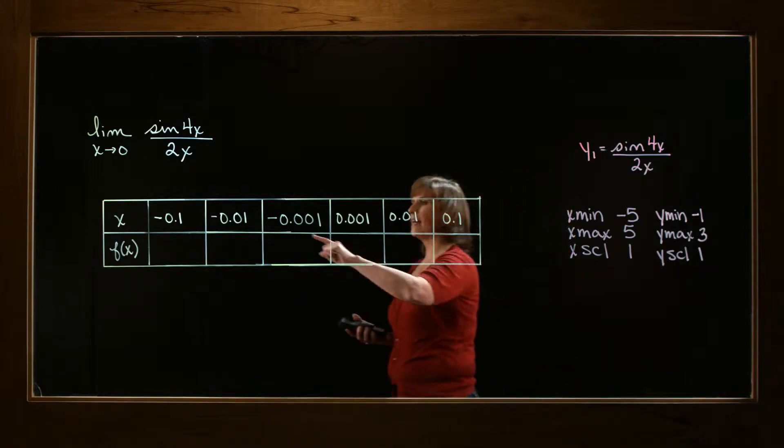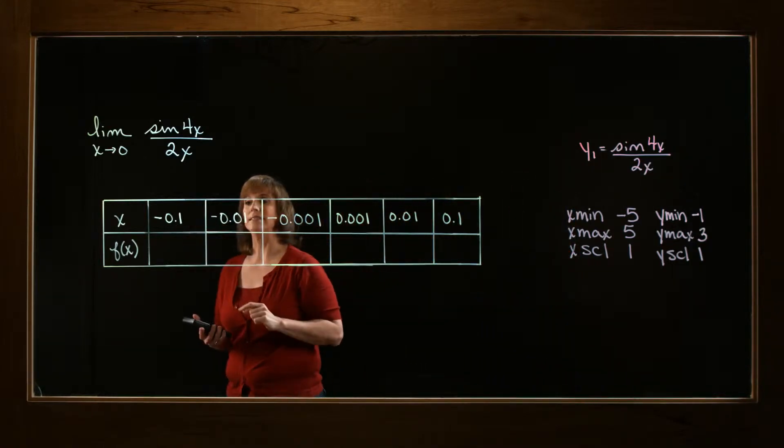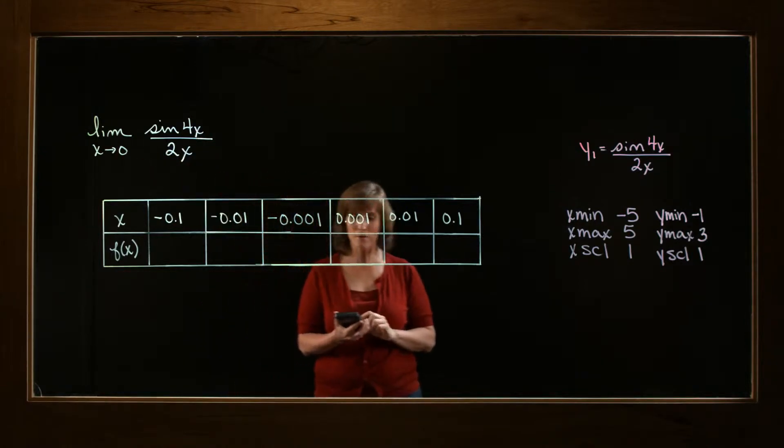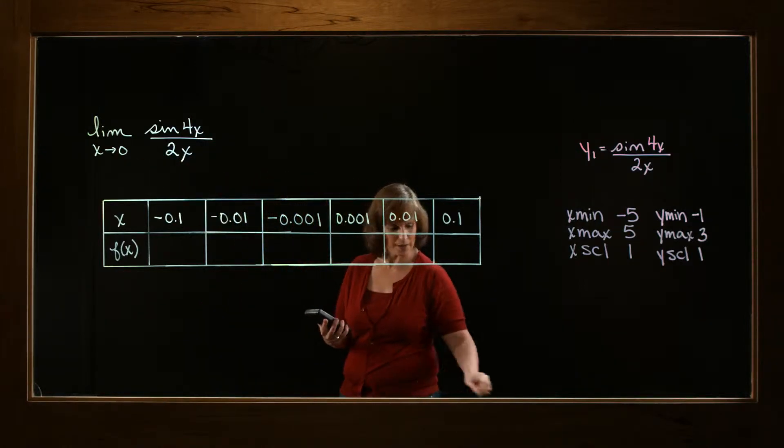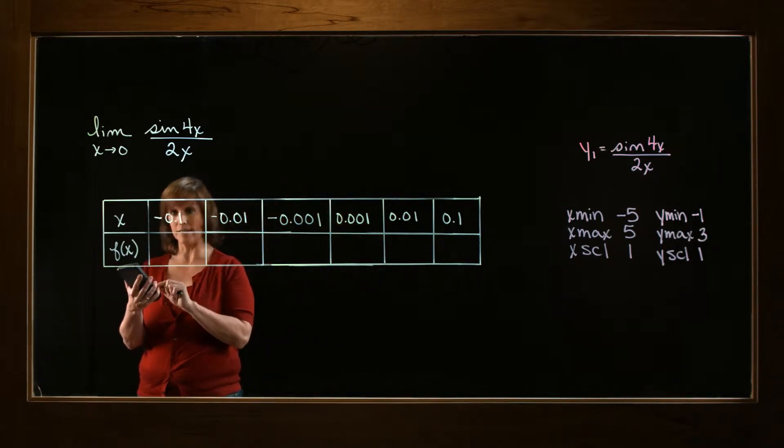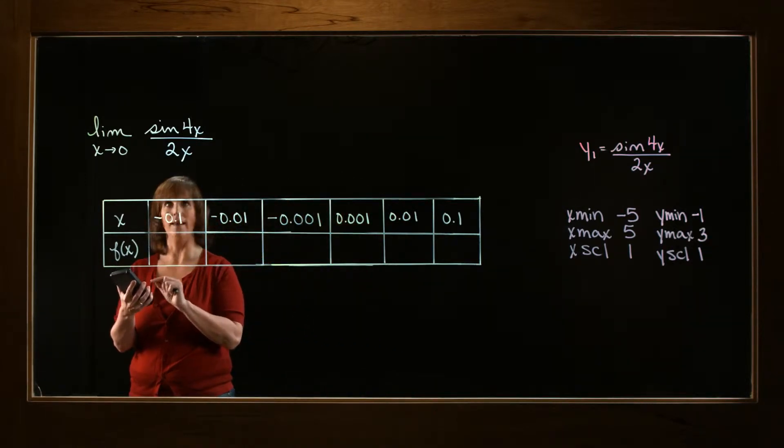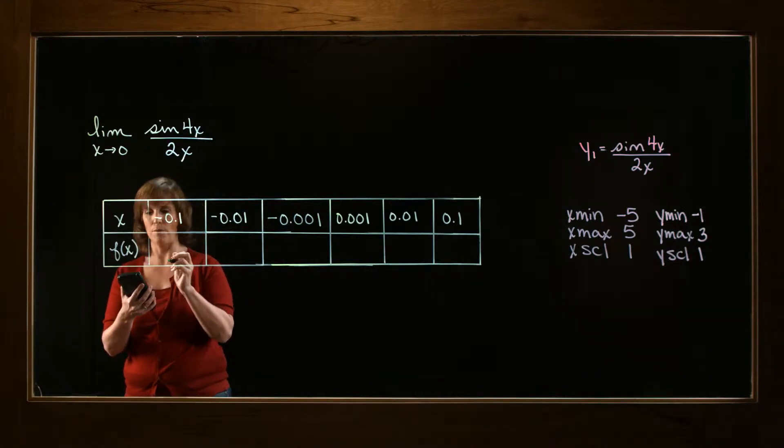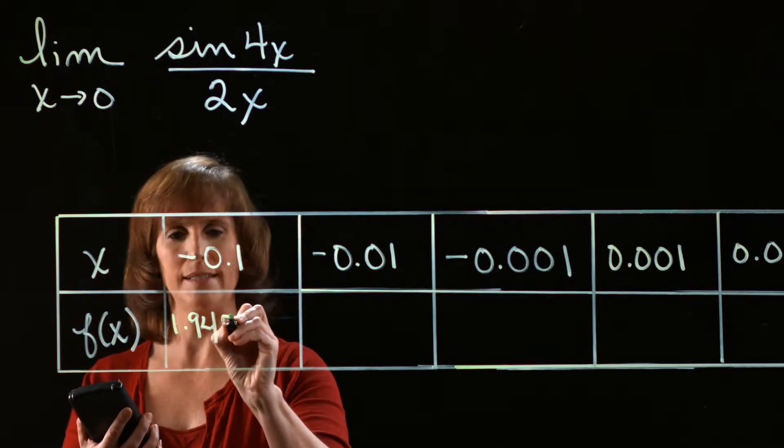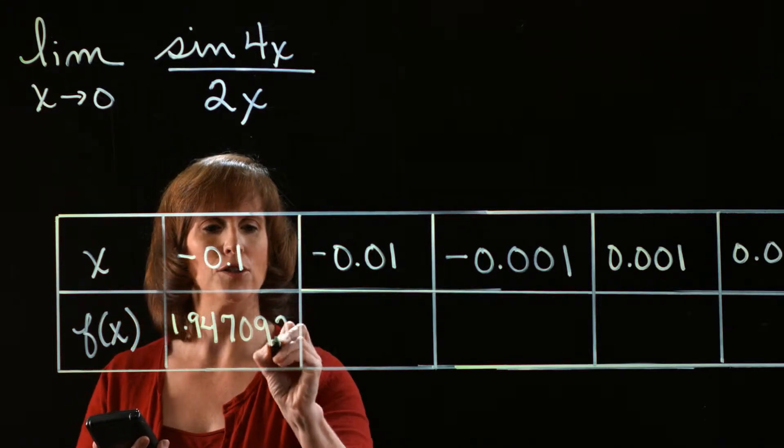So what I want to do is plug in negative 0.1 into my expression and see what my result is. So if I do that, I'm going to take the sine of 4 times negative 0.01 and divide that by 2 times negative 0.01. And my result is 1.947092.